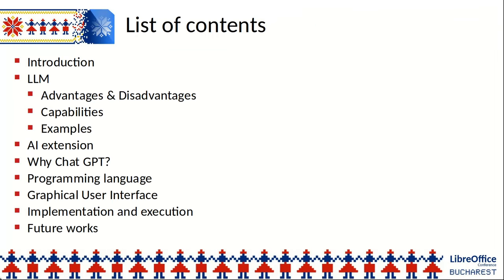In this presentation, I first provide an overview, after that I discuss about LLMs — advantages and disadvantages of using them, capabilities and examples. Then I speak about the capabilities of the AI extension that is the result of my efforts. After that, I discuss why I use the ChatGPT API and then I speak about the choice of programming language used for creating the extension. I introduce the graphical user interface and discuss implementation and execution in the LibreOffice environment.